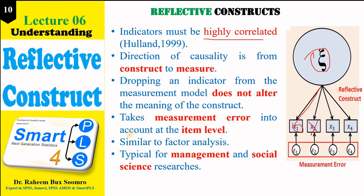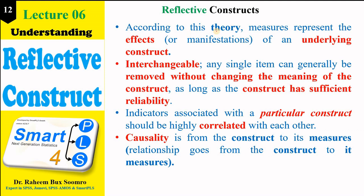Reflective constructs take measurement error into account at the item level — every item has a measurement error. Typically we use these in the measurement model in social science, though in SmartPLS you will not see these measurement errors displayed. According to this theory, the measure reflects the manifestation of an underlying construct, and any single item can generally be removed without changing the overall meaning of the construct.